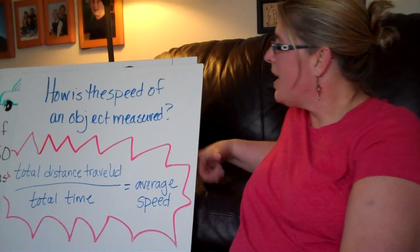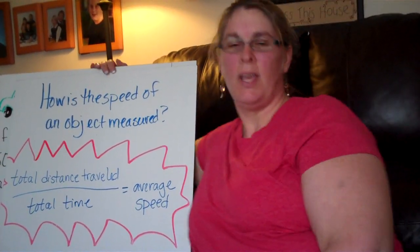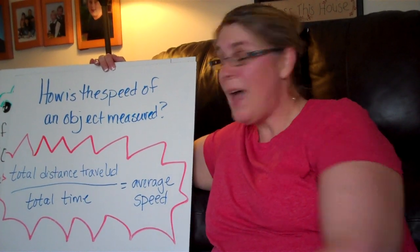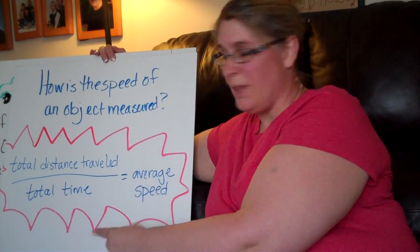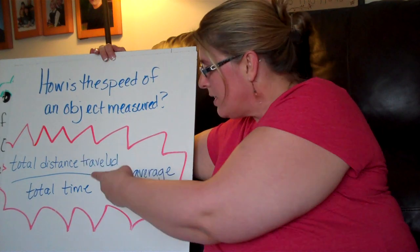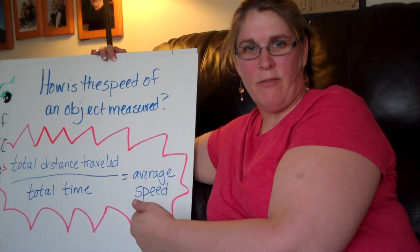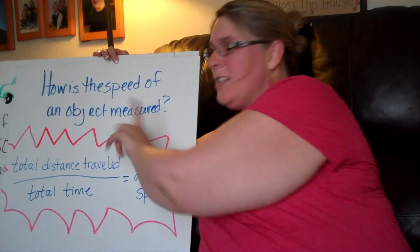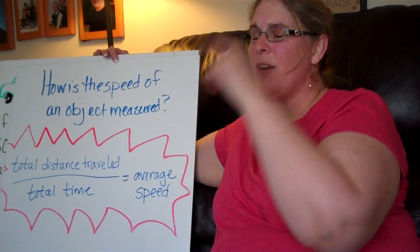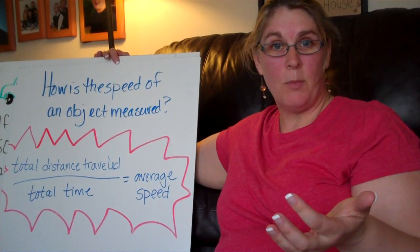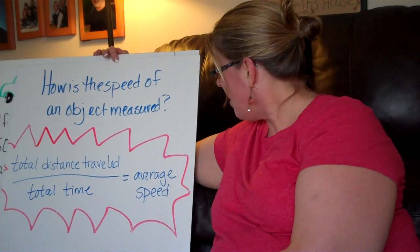What we're going to look at today is how is the average speed of an object measured. One of the things that you really need to have is this formula: the total distance traveled divided by the total time equals your average speed. This formula you're going to want to have written down and you're probably even going to memorize it by the time we're done in order to calculate average speed.